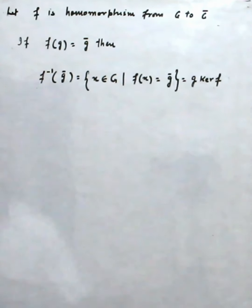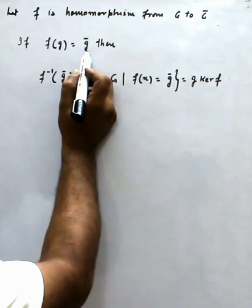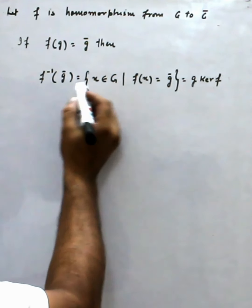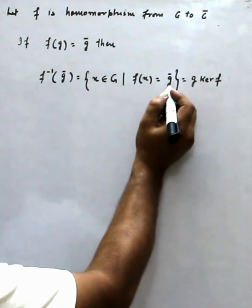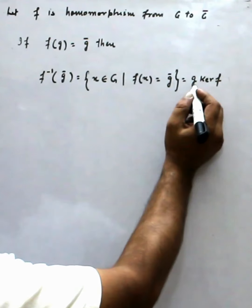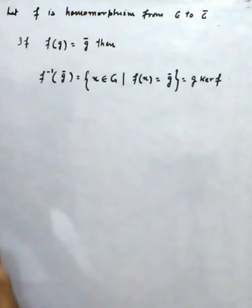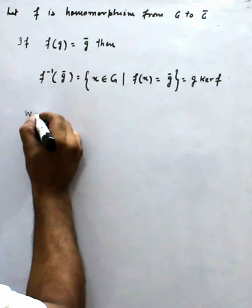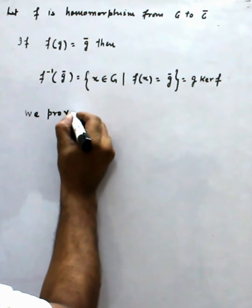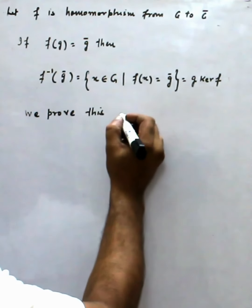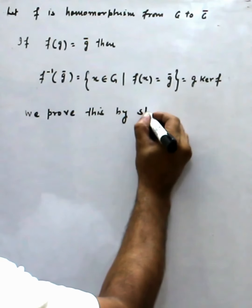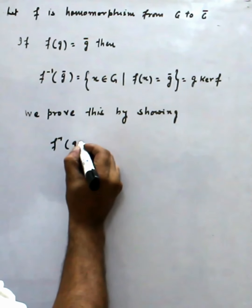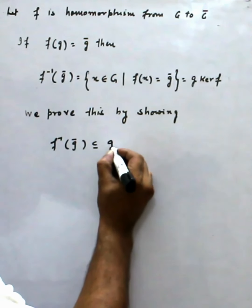Let f be a homomorphism from G to G-bar. If f(g) equals ḡ, then f-inverse(ḡ) is the set containing elements x of G such that f(x) equals ḡ, and this equals g times Ker(f). We will prove this result by showing f-inverse(ḡ) ⊆ gKer(f).